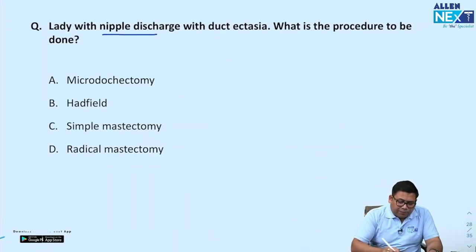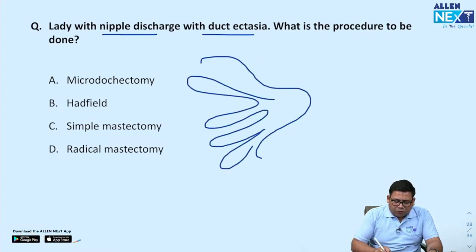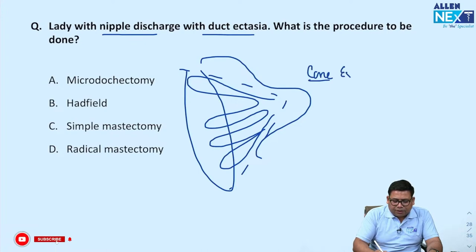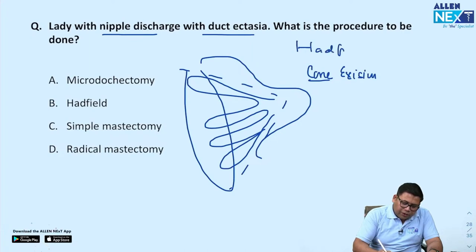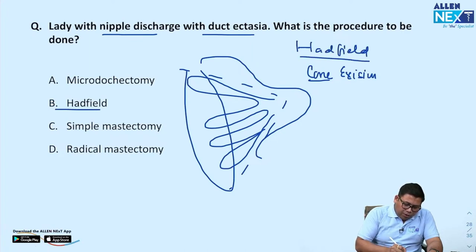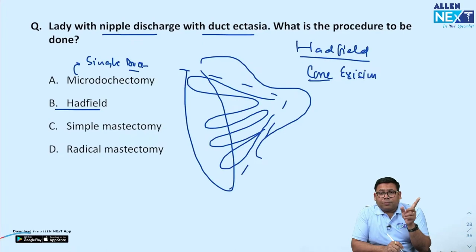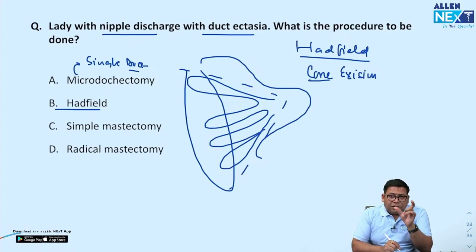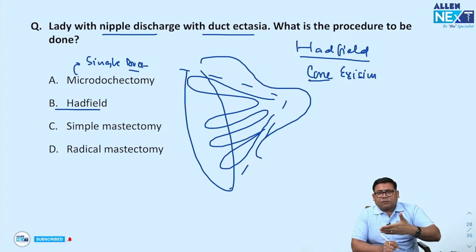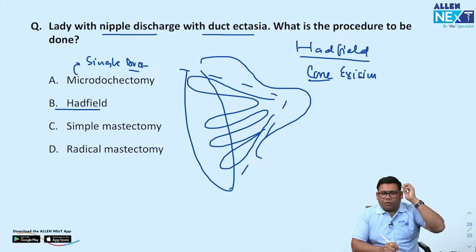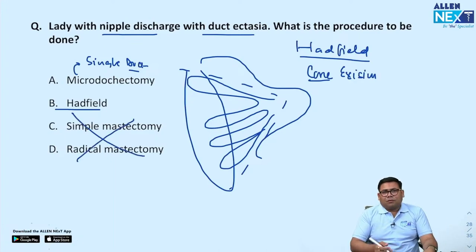Next: lady with nipple discharge with duct ectasia. Duct ectasia involves inflammation of multiple ducts. Treatment is radial or cone excision — known as Hadfield cone excision. Microductectomy is done for a single duct. Duct ectasia usually involves multiple ducts, so the correct treatment is Hadfield's radial excision with shaving of the undersurface of the nipple, as it can be a chronic subareolar abscess. Mastectomy is not done for these patients.